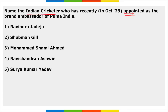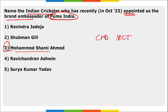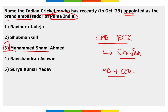Mohammad Shami Ahmed has been appointed as brand ambassador of Puma India. Sanjay KR Jain has been appointed as chairman and managing director of IRCTC. Ashok Vaswani has been appointed as MD and CEO of Kotak Mahindra Bank.